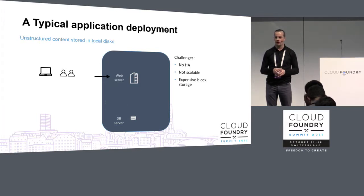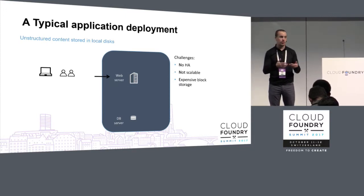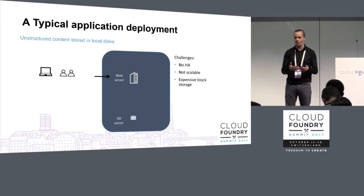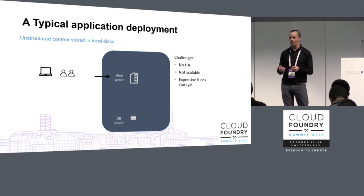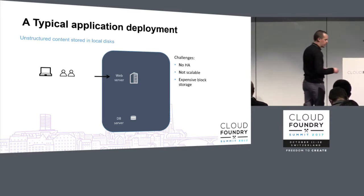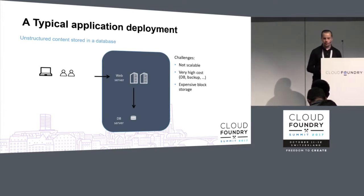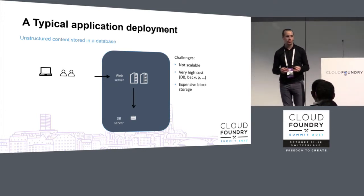There's an obvious challenge: you have no HA because the data can be accessed only by this single VM. So it's quite expensive and it doesn't provide any scalability or high availability. The second option that doesn't look very good either is to use a database.